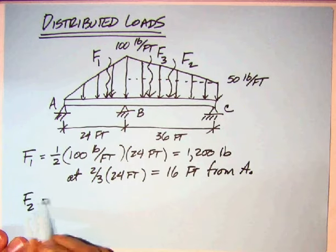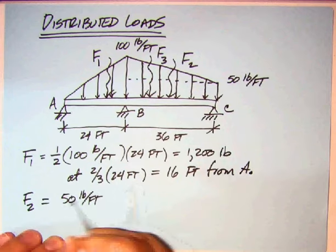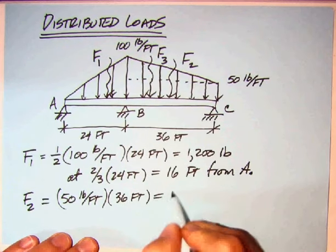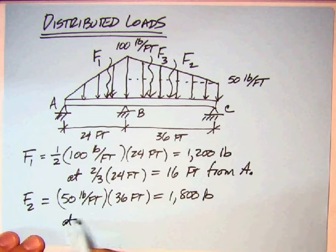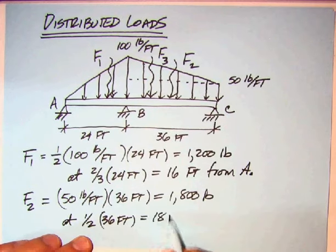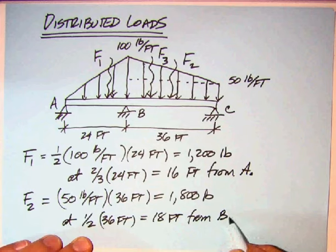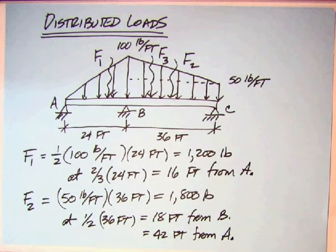F2 is the rectangle, so it's just 50 pounds per foot times its base, which is 36 feet. That's equal to 1800 pounds. And where is it located? It's at halfway, at one half 36 feet, which is equal to 18 feet from B. But we're going to want to know where that is from A when we go to do our moments. So if we add that 18 to the 24, it's equal to 42 feet from A.